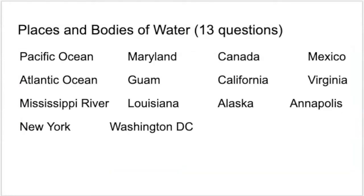Here are the answers. Pacific Ocean is on the west coast of the United States. Atlantic Ocean is on the east side of the United States. The Mississippi River is the longest river. New York is where the first capital was, and it is also where the Statue of Liberty is, and it is also one of the 13 original colonies. Maryland is another one of the 13 original colonies, and so is Virginia. Guam is a U.S. territory that is still a territory today. Louisiana is a territory that was bought in 1803 from the French.